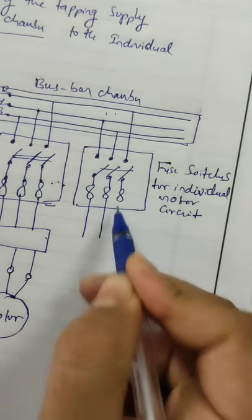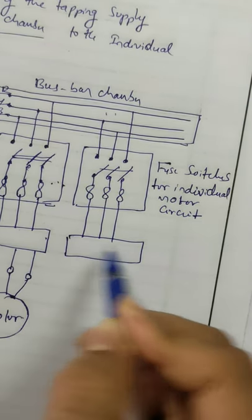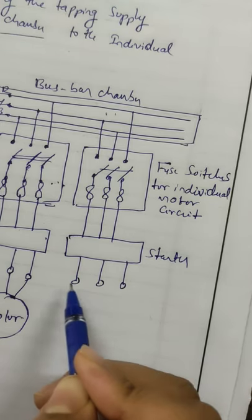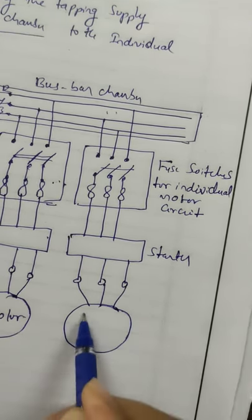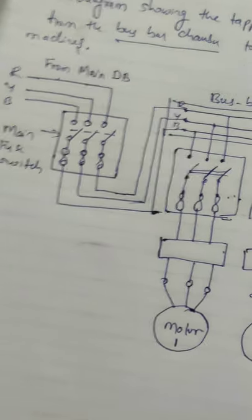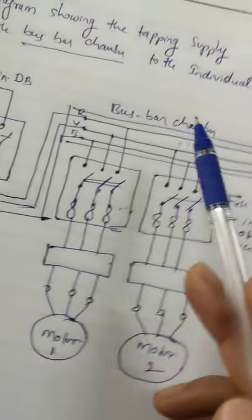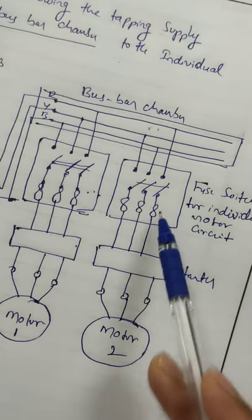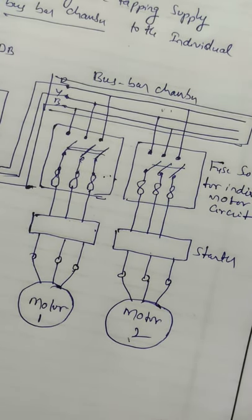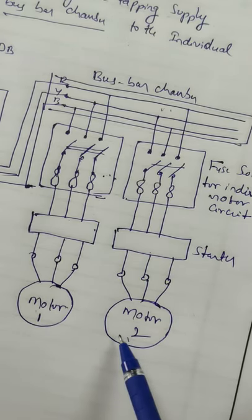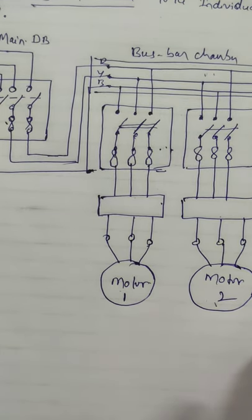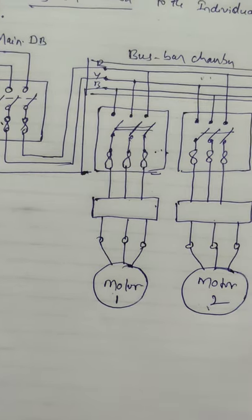From the starter we take three outputs and connect to a second motor — Motor 2. This completes the connection diagram for tapping supply from the main distribution board to switchboard, switchboard to bus bar chamber, and bus bar chamber to individual motor switches, starters, and motors. This diagram applies to three-phase machines including motors, generators, or any type of large load. In the next video we will discuss the important considerations required for motor installation.